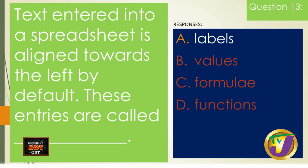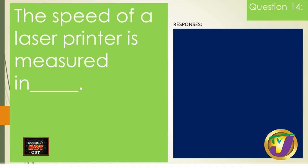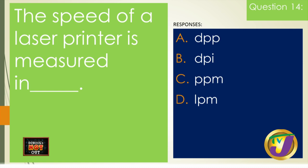Question fourteen: the speed of a laser printer is measured in A) DPP, B) DPI, C) PPM, or D) LPM. You have to know what these acronyms mean. DPP doesn't relate to printers at all. DPI stands for dots per inch. PPM stands for pages per minute. LPM stands for lines per minute. DPI relates to print quality, not speed.